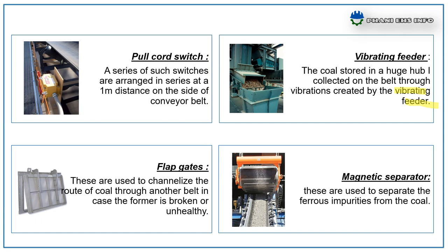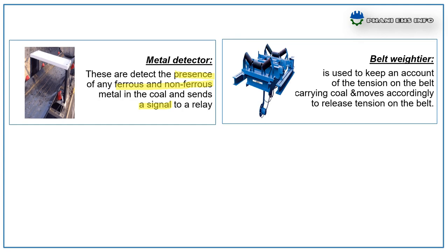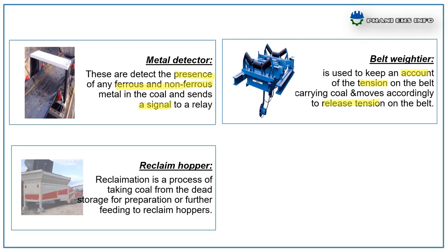Magnetic Separator — used to separate ferrous impurities from the coal. Metal Detectors — these detect the presence of any ferrous and non-ferrous metals in the coal and send a signal to a relay which closes to cease the movement of the belt until the metal is removed. It basically consists of a transmitter and a receiver. Belt Weigher — it is used to keep account of the tension on the belt carrying coal and is adjusted accordingly to release the tension on the belt. Reclaim Hopper — reclamation is the process of taking coal from dead storage for preparation or further feeding to a reclaim hopper. This is accomplished by belt conveyors.